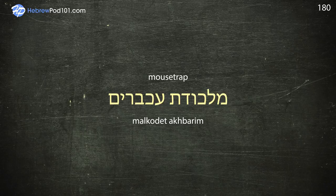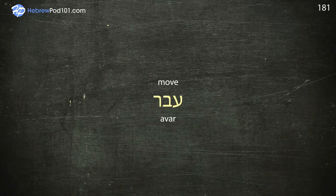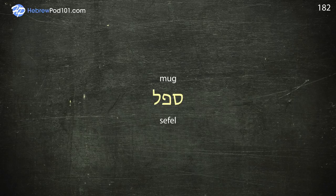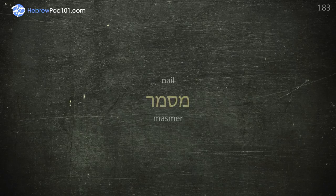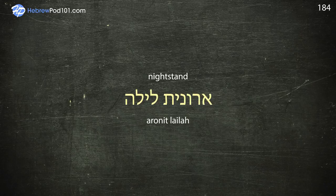Mug — Cefil. Nail — Masmail. Nightstand — Aronit Laila.